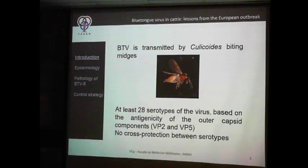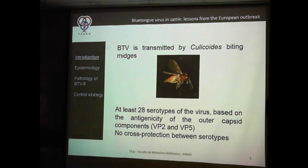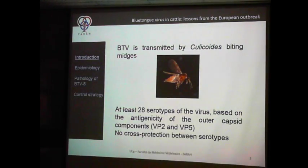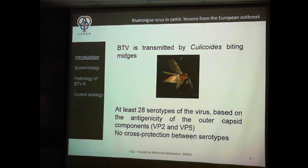Transmitted by Culicoides — here is a picture of this small beast. At least 28 serotypes have been described so far, and new serotypes are described almost every two or three months. This is due to the antigenicity of the outer capsid components VP2 and VP5. Extremely important: there is no cross-protection between serotypes, meaning an animal infected or vaccinated for one serotype is not protected against infection by another serotype. This is really a problem in the epidemiology of this disease.